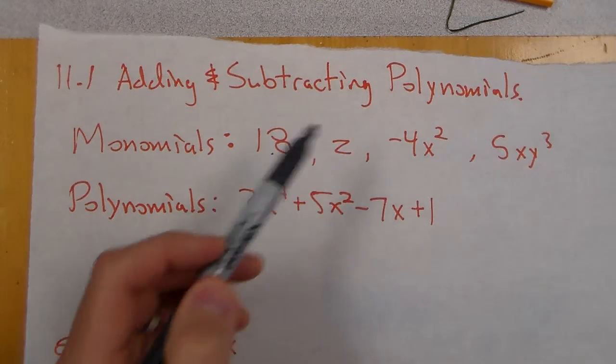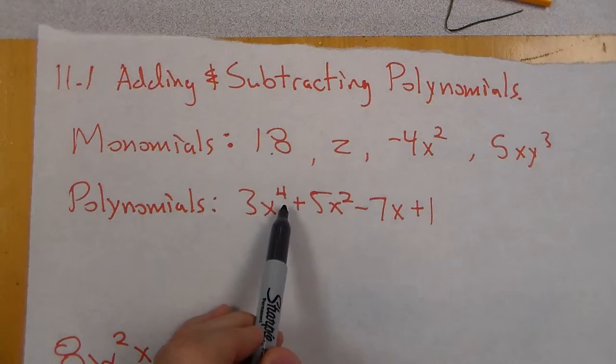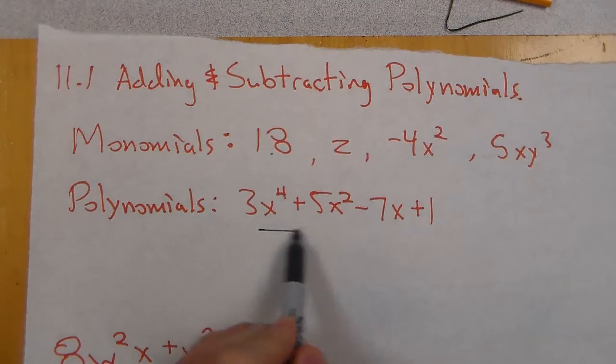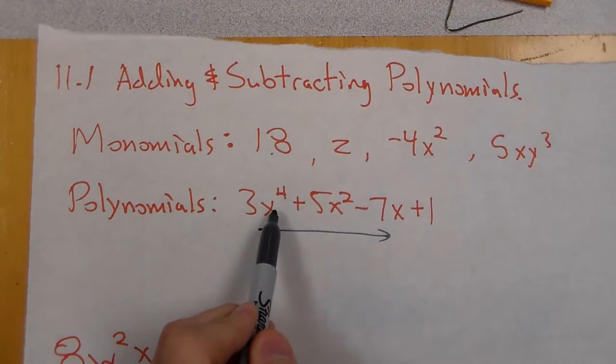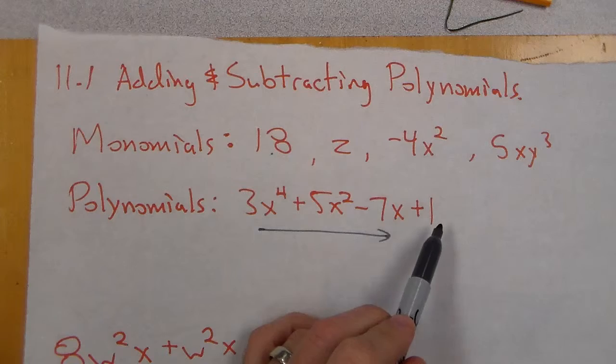Now we put those together to get a polynomial. A polynomial will be usually written where the highest degree, the highest exponent, is first and then it goes in descending order. So I have x to the fourth, x squared, x, and eventually no x, just the constant.